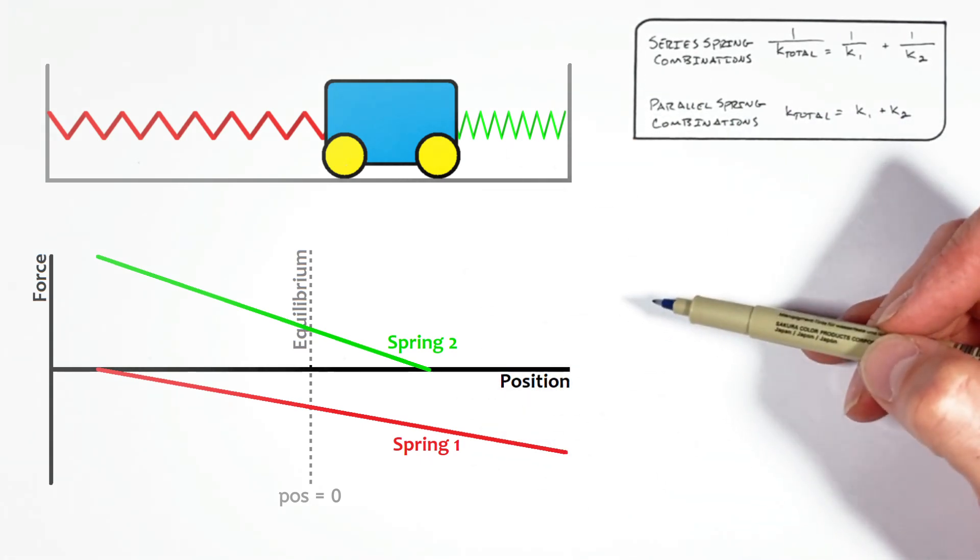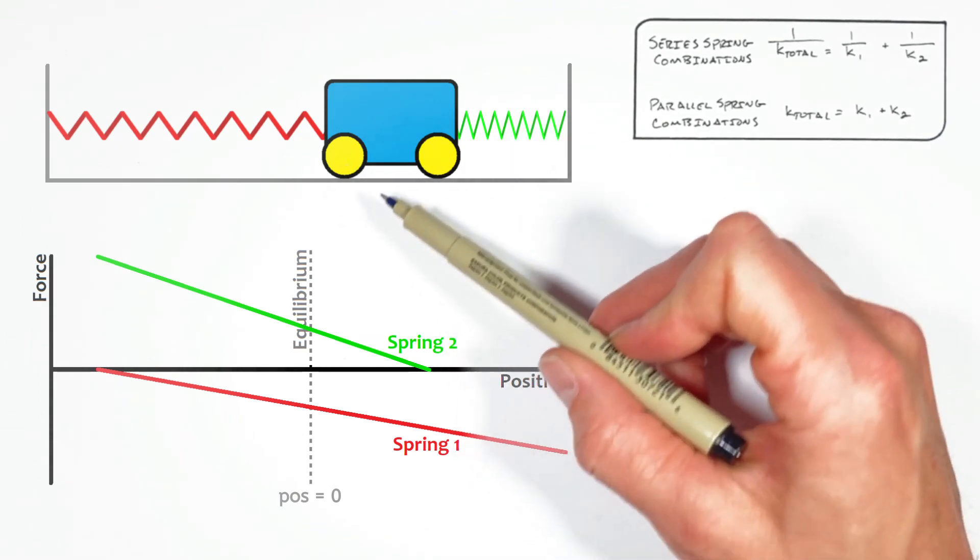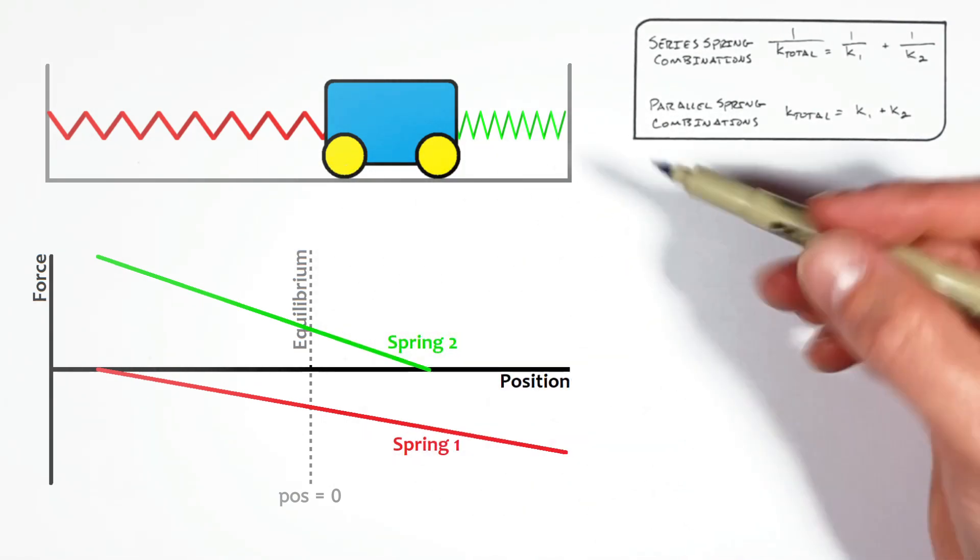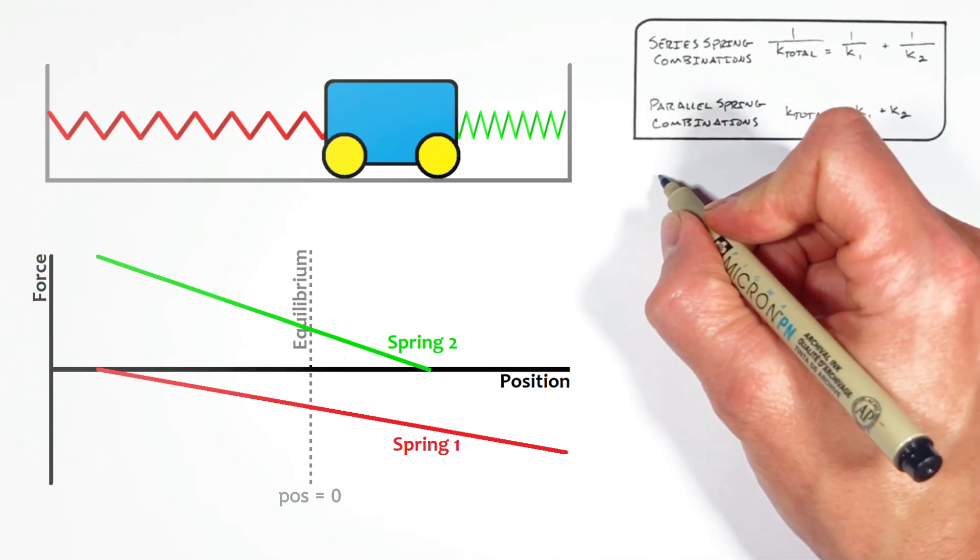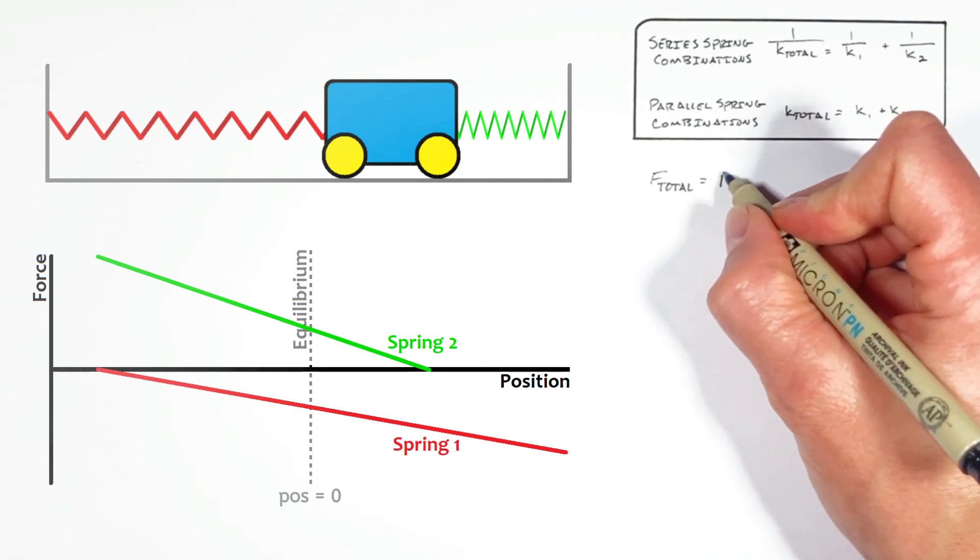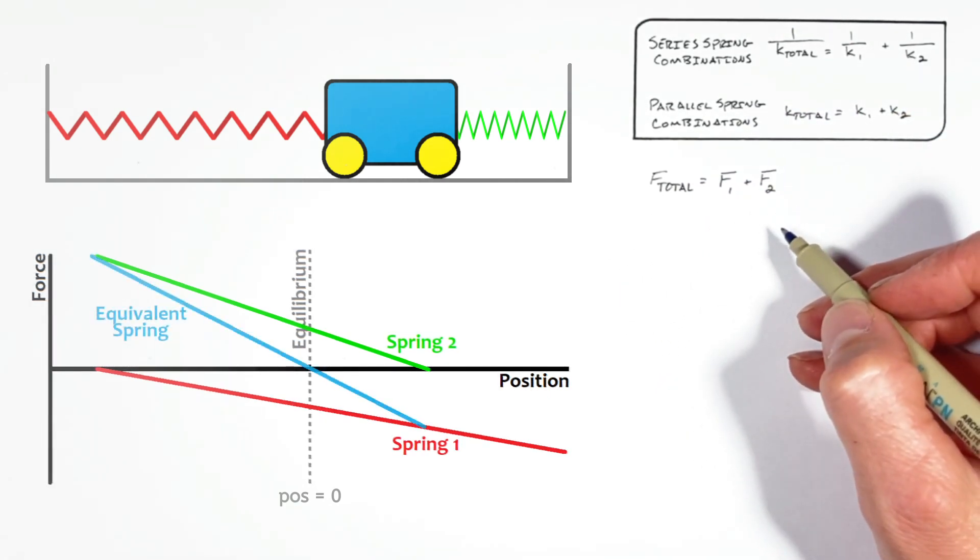But here's the key in the whole problem. The block doesn't know whether it's being pushed or pulled on by one spring or two. Ultimately, all it knows is there's some total or net force on the block. And that force is the sum of the two forces by the springs.